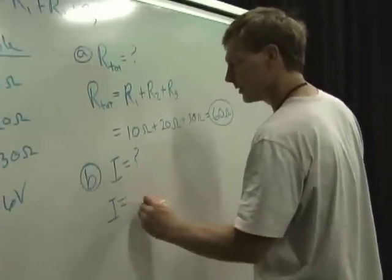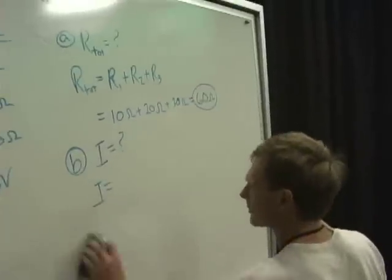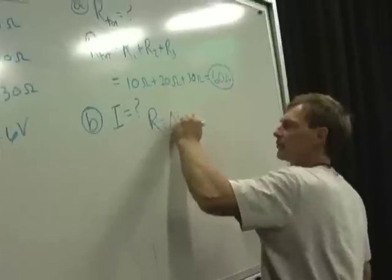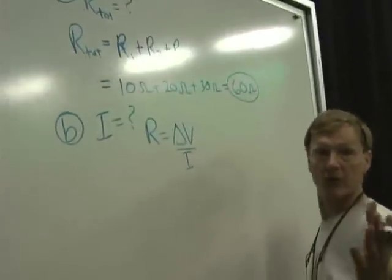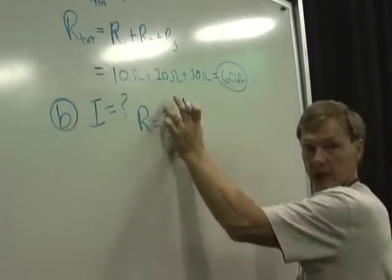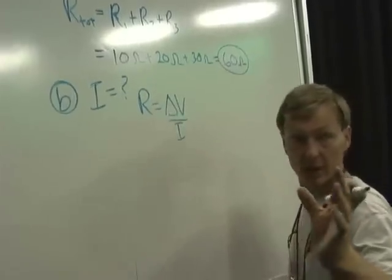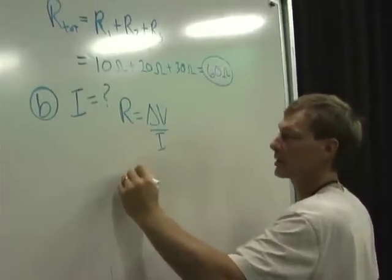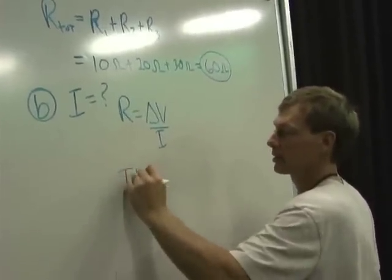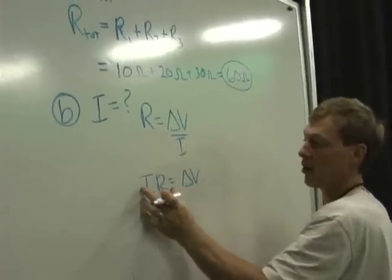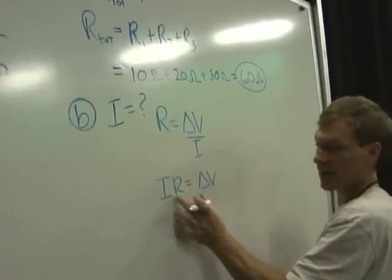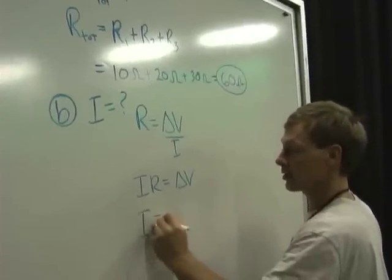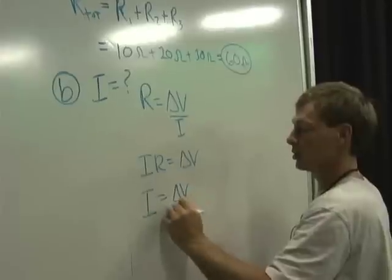The current is, well, let's see, resistance is voltage over current, Ohm's law. Now I want to solve for current. So I'll have to multiply both sides by current. I need to get current on top and then by itself. I'll multiply both sides by the current to get it on top. And I'll get IR equals delta V. And now I'll divide the resistance out from both sides. As long as I do the same thing to both sides, it'll still be true.